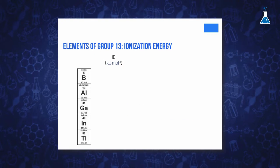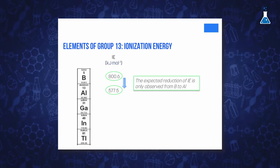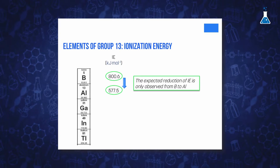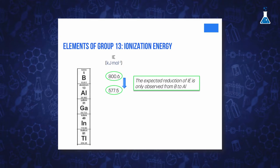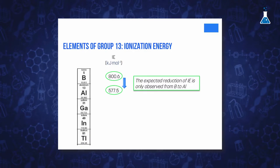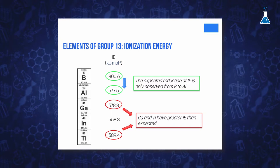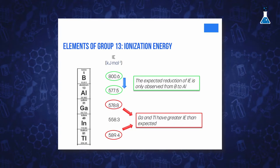Within Group 13, we would expect a decrease in ionization energy values going down the group. However, this reduction is only observed going from Boron to Aluminium. When we continue going down the group, we observe that Gallium and Thallium have a greater ionization energy than expected. To explain this unexpected behavior for heavier elements in the group, let's examine the situation for each of them.